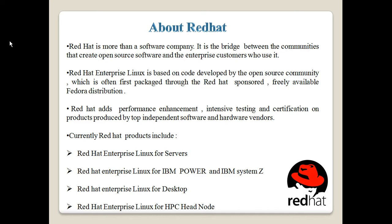Red Hat has tested the software through multiple phases of testing and then introduced it for enterprise customers. Red Hat Linux is based upon code developed by the open source community, which is often first packaged through the Red Hat sponsored, freely available Fedora distribution. You may see the Fedora project as a testing project or beta phase — whatever developments are made, they are first introduced into Fedora, used and tested by people, bugs are fixed, and then it is finally introduced into the enterprise customer level product.